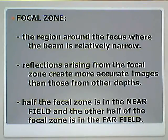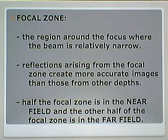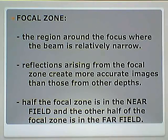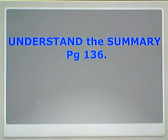The focal zone is the region around the focus where the beam is relatively narrow — the area from the focus and everything very close to it. Half of the focal zone lives in the near field, and the other half lives in the far field. So if the focal zone measures four centimeters, two of those centimeters are in the near field and the other two are in the far field. For a brief summary of all these descriptive terms, look at page 136, read it, understand it, and you will be just fine.